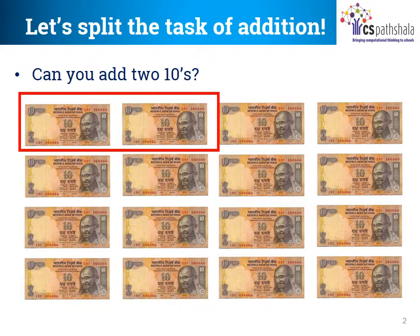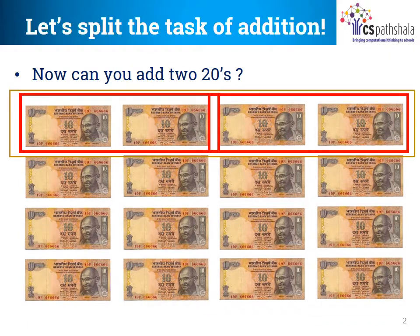Let's start by adding two 10 rupee notes first that you see on the left hand side in the red box. What is 10 plus 10? That's right! It's 20. Thus, we have solved our small problem. But wait! Just like the two 10 rupee notes on the left, won't the two 10 rupee notes on the right also be added to Rs. 20? That's correct! Now you have two red boxes of Rs. 20 each.